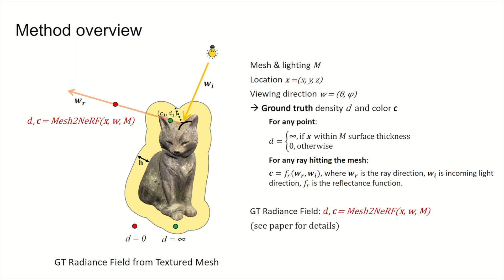Using our definitions of density and color, Mesh2NRF can compute the ground truth color and density for any given location and viewing direction.